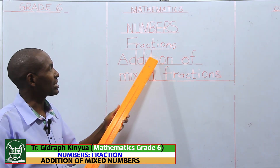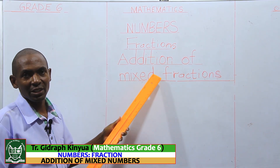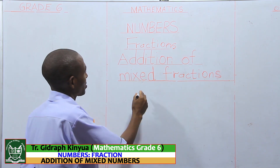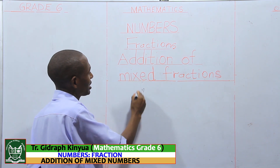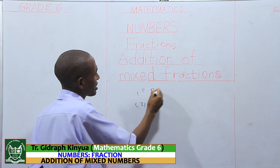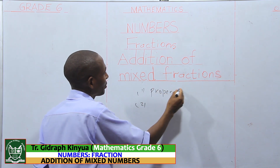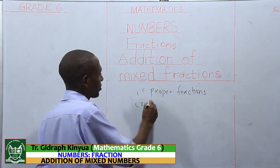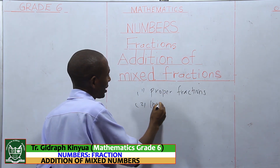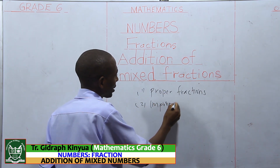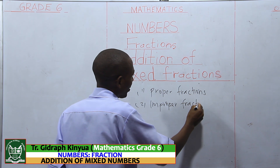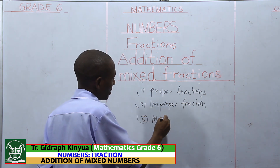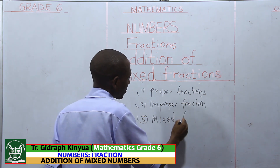Before we start addition of mixed fractions, we want to talk about the three types of fractions. The first one are proper fractions. The second one are improper fractions. And the third one are mixed fractions.